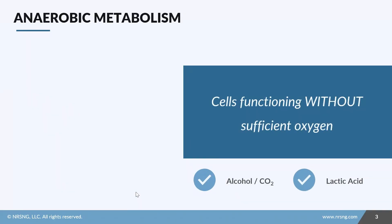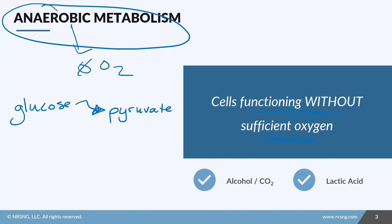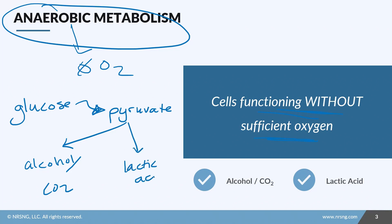To give you a foundation for where lactic acid comes from, let's go back to chemistry. The main source of lactic acid production in our body is anaerobic metabolism — meaning the cells are functioning without oxygen. This could be because of poor perfusion or hypoxia. In the absence of oxygen, glucose gets broken down into pyruvate, which then gets broken down into either alcohol and carbon dioxide, or into lactic acid.